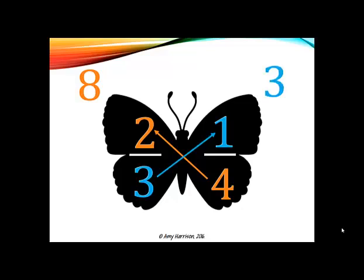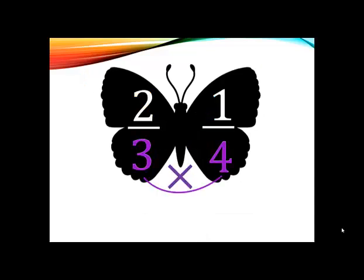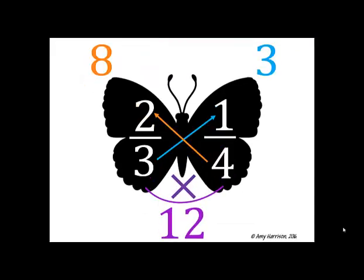Next, we need to multiply the denominators. 3 times 4 gives us 12. Here's what we have so far.